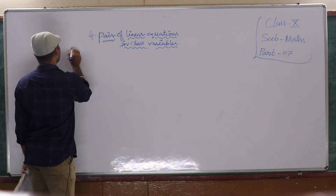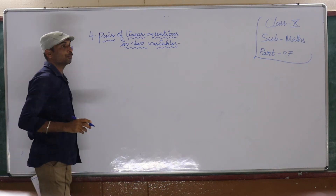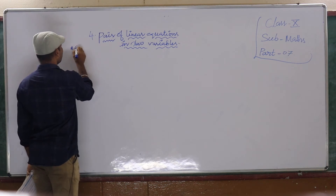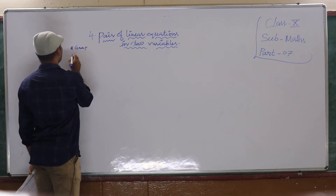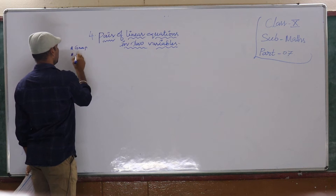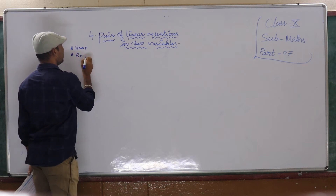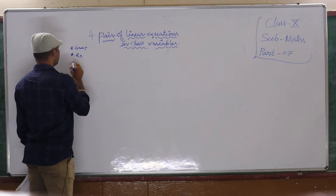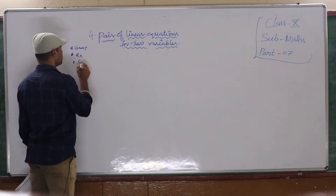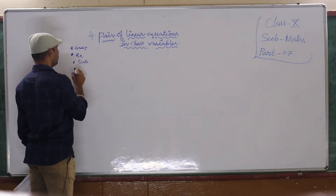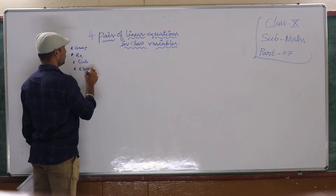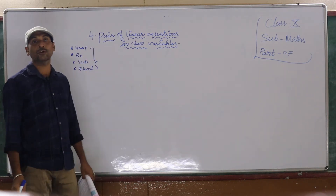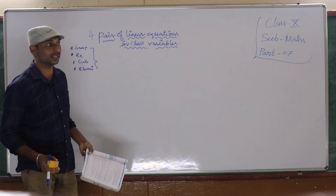The four topics from yesterday: first one is graphical representation, second one is relationship between coefficients and system of equations, the third one is substitution method, and the fourth one is elimination method. We have discussed these four topics in the previous class.